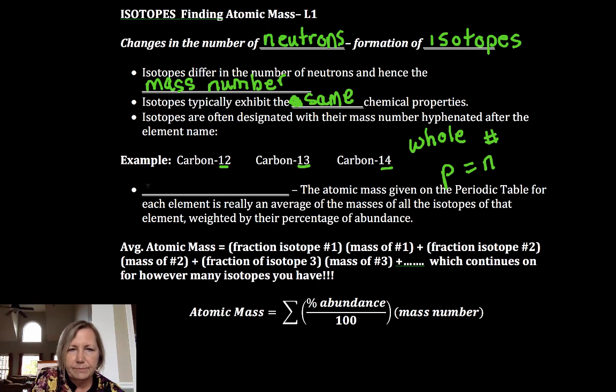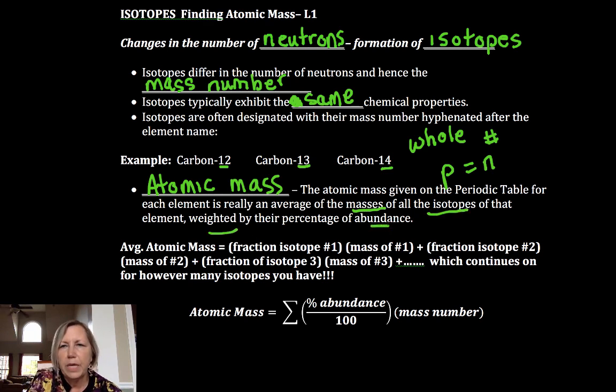Alright, the atomic mass is the weighted average. It's of all the mass numbers of all the isotopes weighted by their abundance.